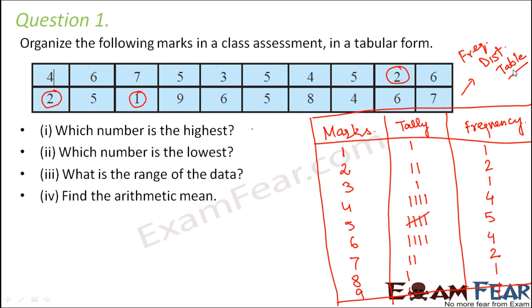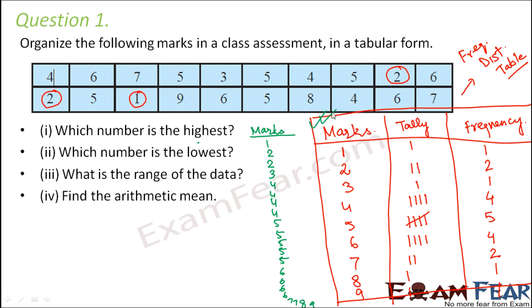Another simple way of organizing this data in tabular form is without the concept of frequency. All you do is organize the data in ascending order — you just have a column called marks and write everything in increasing order. We didn't have enough space so it continued across, but this is also a valid way of organizing data in tabular form. The frequency distribution table is, however, a more improvised way of arranging the data.